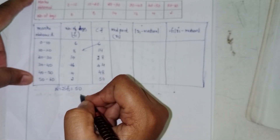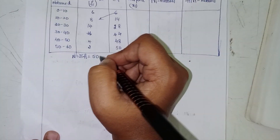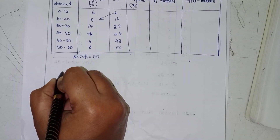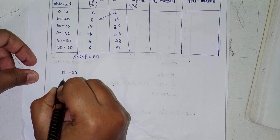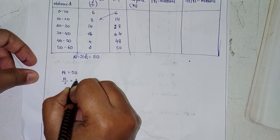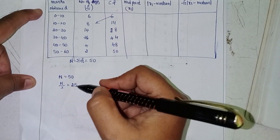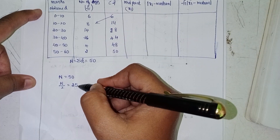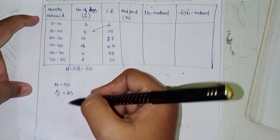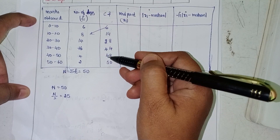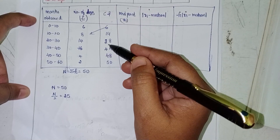Next, midpoint. n is equal to 50, so n by 2 equals 25. I will check where 25 falls. 25 is less than the greatest cumulative frequency value of 28.